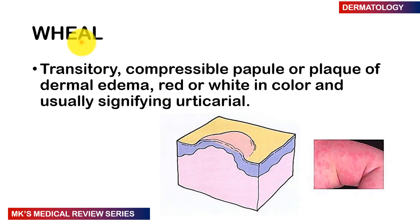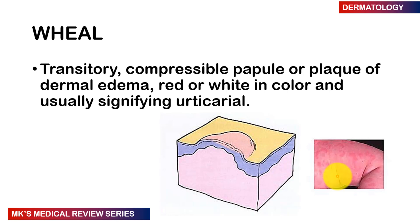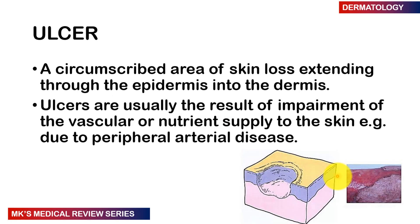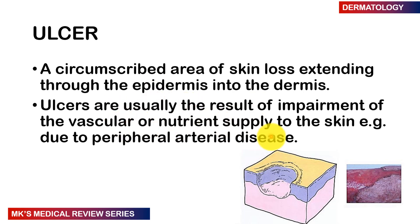A wheal, also known as a hive, is a transitory compressible papule or plaque of dermal edema. It may be red or white in color and usually signifies urticaria. An ulcer is a circumscribed area of skin loss extending through the epidermis into the dermis — a break in the continuity of the epithelium with associated microscopic tissue death. Ulcers may result from impaired vascular supply and are often due to peripheral arterial disease. Here's a picture of what an ulcer looks like.